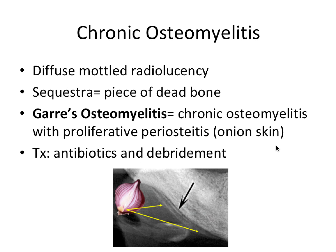Next, we have chronic osteomyelitis, which shows a diffuse mottled radiolucency because the infection has been around longer and has had time to impact the cortical bone. Sequestra is an important term — it refers to a piece of dead bone. Garré's osteomyelitis is a special type of chronic osteomyelitis with proliferative periostitis, showing an onion skin appearance from layers of new periosteum laid down in response to chronic infection. Treatment is antibiotics and debridement of the infected area.